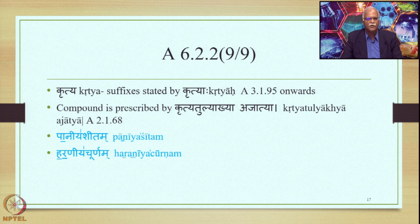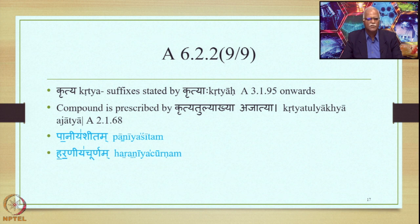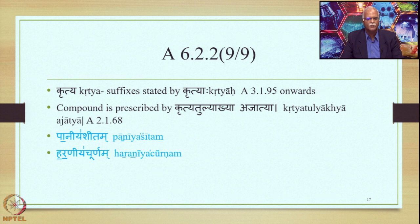Finally, the environment is Kritya — the title of suffixes stated by the Sutra Krityaha, 3.95 onwards. The compound is prescribed by Kritya Tulyakya Ajatya, 2.168. In Paniyashetam, Paniya is a Kritya word and therefore retains its own accent — E is Udatta. Because E is Udatta, A which precedes and Y which follows are Anudata; PA is marked with horizontal bar and Y is marked with vertical bar on top. In Shetam, both vowels are Anudata, but because they follow a Swarita, they are left unmarked. Similar is the case with Haraniya Churnam, where E is Udatta and everything else is Anudata.